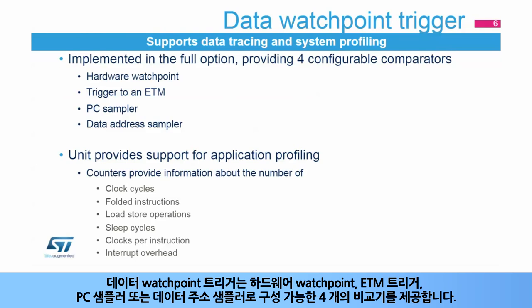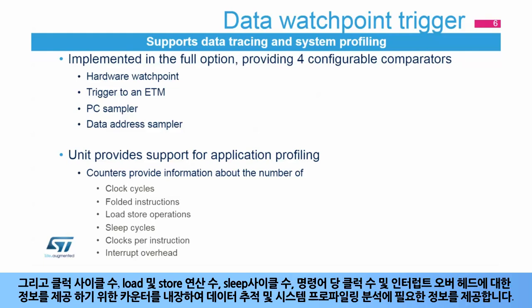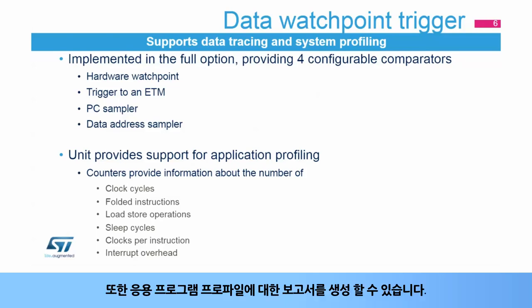The embedded data watchpoint trigger provides four comparators configurable as a hardware watchpoint, ETM trigger, PC sampler, or data address sampler. It provides the necessary information for data tracing and system profiling analysis, for which it embeds counters for counting the number of clock cycles, load and store operations, sleep cycles, clocks per instruction, and also information about interrupt overhead. It can also generate reports about the application profile.